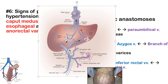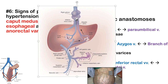In portal hypertension the pressure gradient between the portal system and the IVC/hepatic veins increases. The most common cause is cirrhosis, which creates resistance in the portal veins. Other causes include portal vein thromboses (pre-hepatic), constrictive pericarditis (which backs blood from the right atrium into the liver), and Budd-Chiari syndrome (occlusion of the hepatic veins).